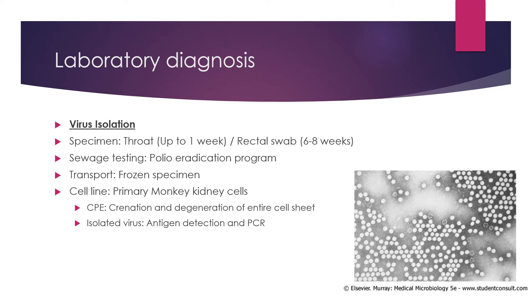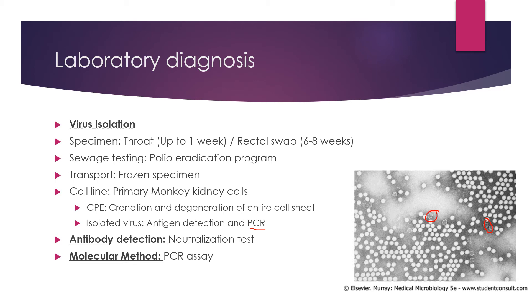On transport, specimens may be kept frozen. Primary monkey kidney cells are the most recommended cell lines. Virus growth is identified by cytopathic effect (CPE), appearing in three to six days, where clumping or degeneration of the entire cell sheet occurs. Antigen detection and PCR can also be performed on isolated virus. Antibody detection using neutralizing antibodies and complement fixation antibodies can be done, and PCR is another option for detection of this viral infection.